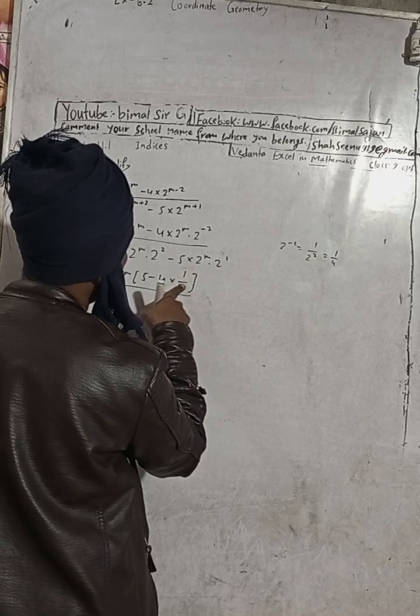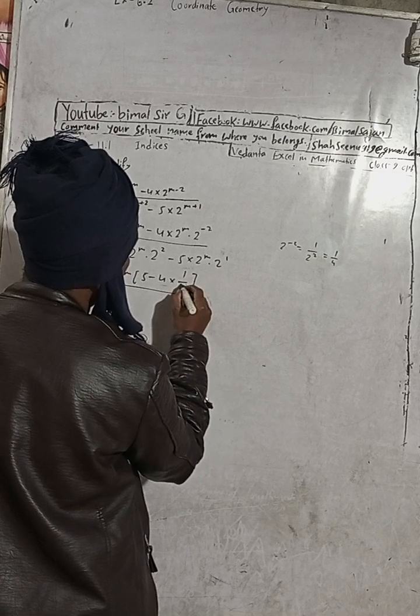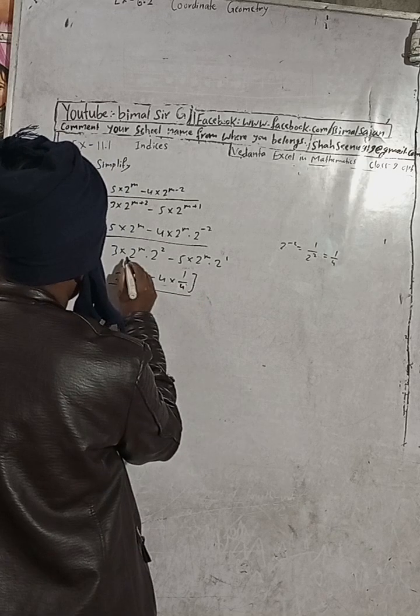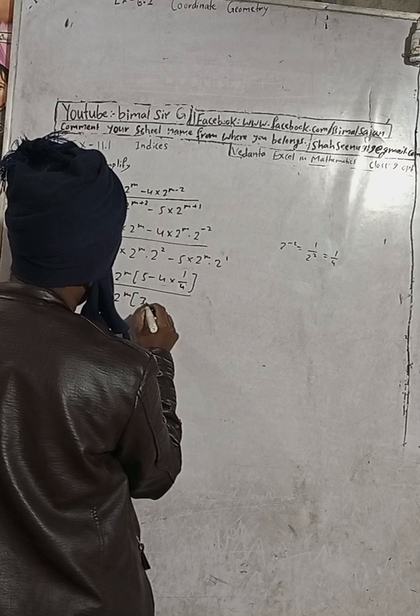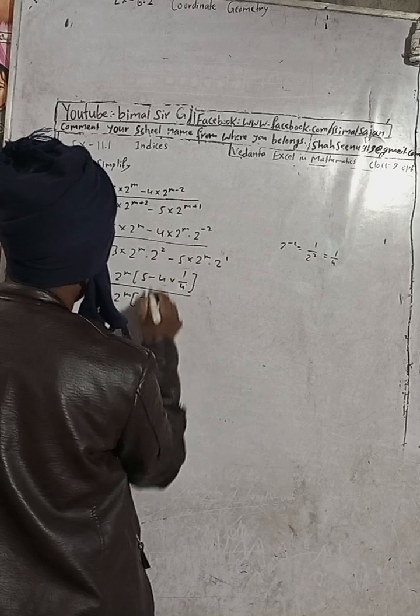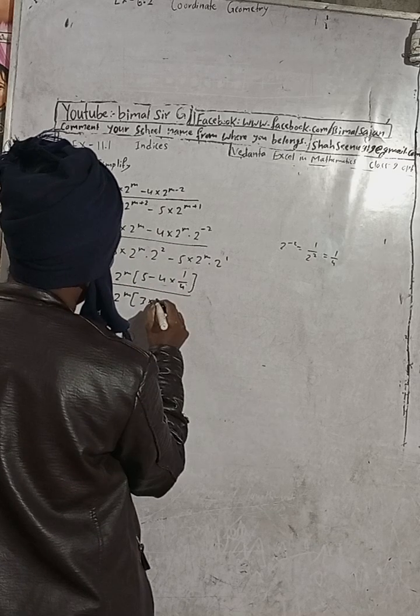If you want you can write it one step more. Write it 1 by 4. Now there is again 2 to the power 1 common. So this is 3. 3 and this is into 2. 2 to the power this is 4.